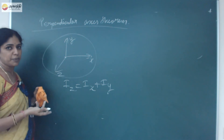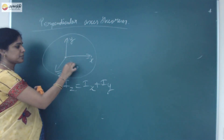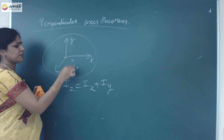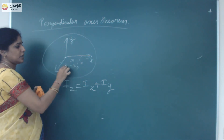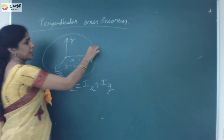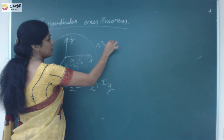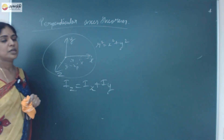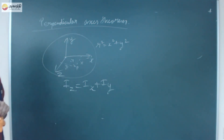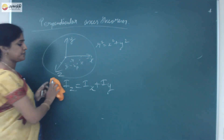So take a point P which is at a distance R, with coordinates X and Y. I can write R² = X² + Y². Using this, I can easily find out the moment of inertia about this perpendicular axis theorem.